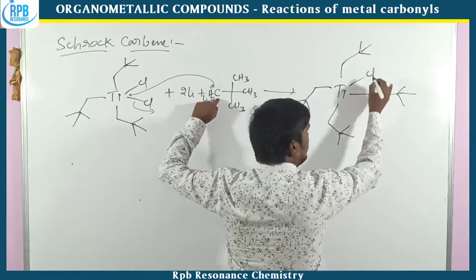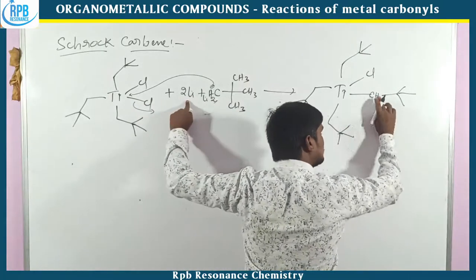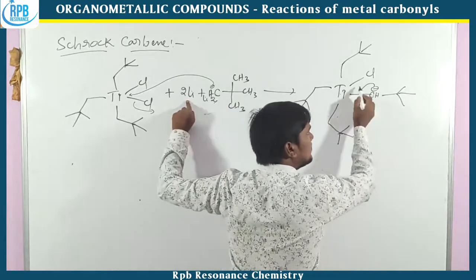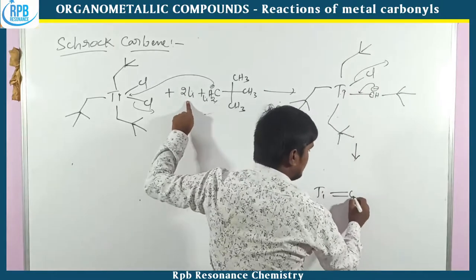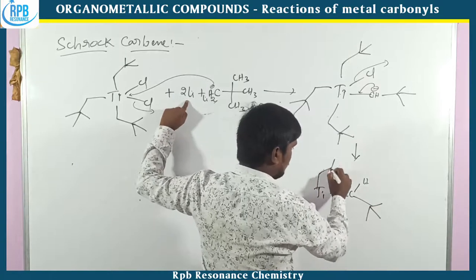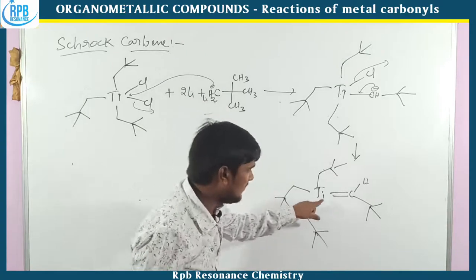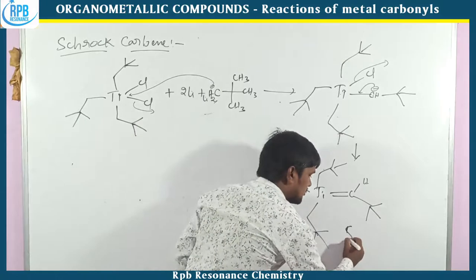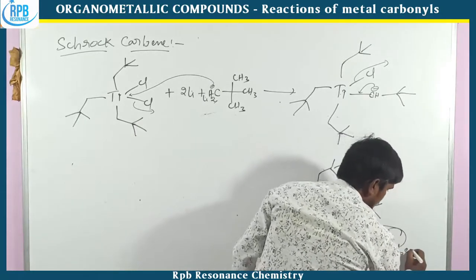The remaining lithiums follow the same process, forming a titanium–carbon triple bond — titanium carbene carbon. So this kind of carbene is called Schrock carbene. Short carbene — Schrock carbene.